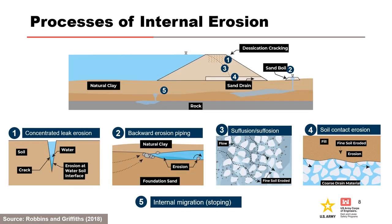A lexicon or terminology has developed over the years because there have been so many issues associated with internal erosion. This figure illustrates specific mechanisms and processes of internal erosion observed in case histories. The general processes to consider are: concentrated leak erosion, backward erosion piping, internal instability suffusion or suffosion, soil contact erosion, and internal migration or stoping. Both concentrated leak erosion and soil contact erosion are forms of scour.